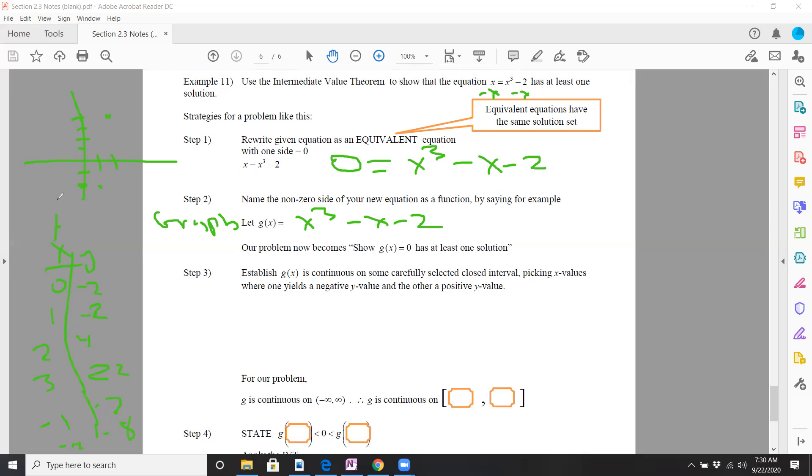So basically, your graph kind of looks like this. Notice how I have this cross in the x-axis somewhere between one and two, right? Because remember, x equals one, y was negative. At x equals two, y was positive.